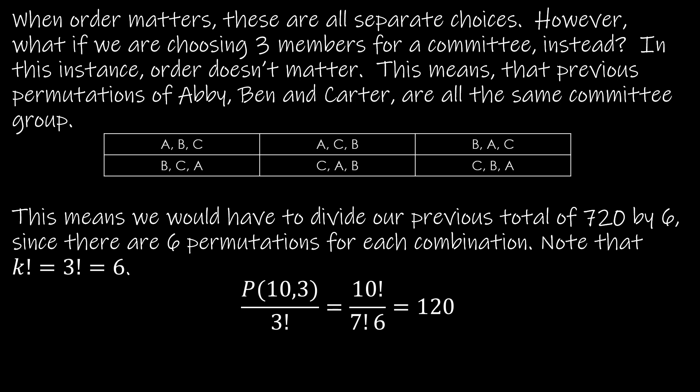So when order matters, those are all separate choices, but if we're just choosing members of a committee, then all of these would be the exact same committee. It doesn't matter the order in which I choose the members of the committee, it's all the same committee group. That means we have to divide our previous total of 720 by six, or three factorial, because every six collections is actually the same collection. So we have the permutation of 10 comma 3 and we're dividing it by three factorial, or six, and we end up with 120.